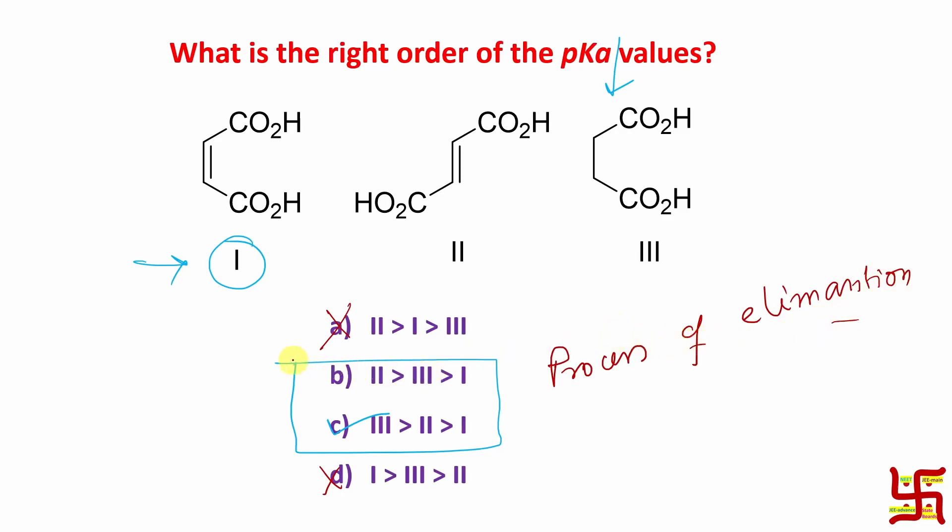Now we got this. Now if you compare, who is least acidic? Here conjugation is there. Here also conjugation is there. So it will be the second option. So in second option only two is there. So this is the right. You don't need to go even think further also. So in this way also you can find out the right answer in less time.